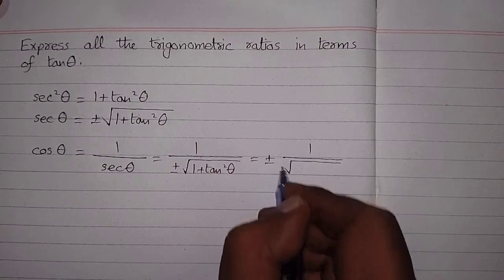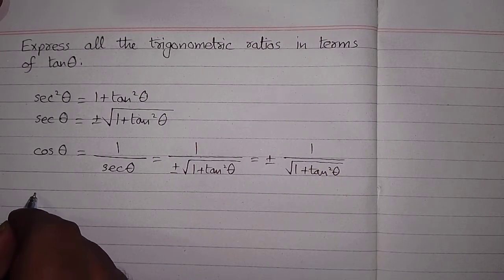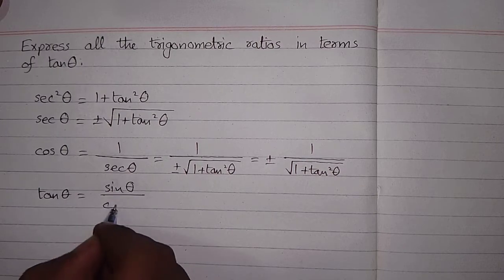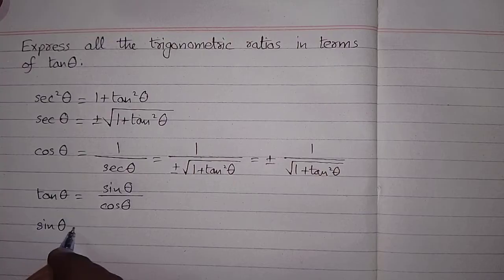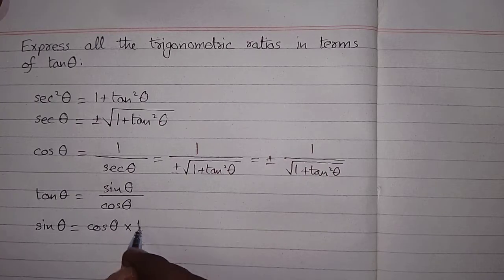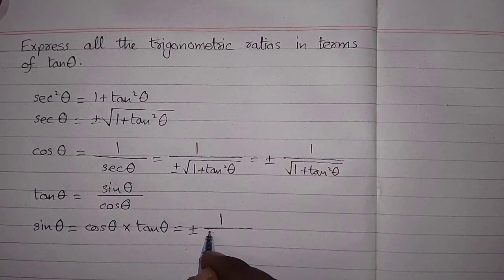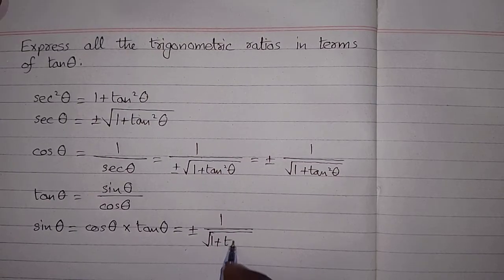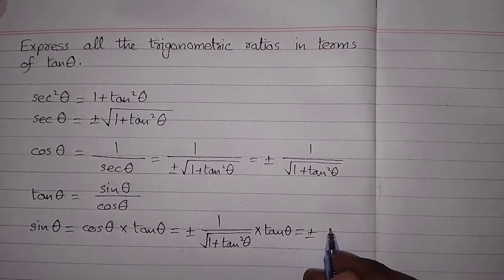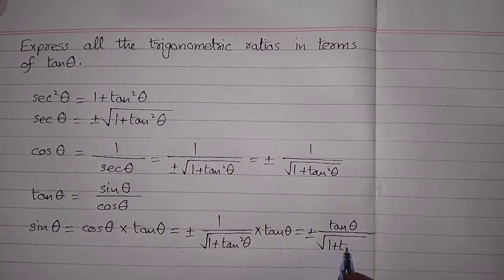Now we find the value of sine theta. We know that tan theta is equal to sine theta upon cos theta, so sine theta can be written as cos theta multiplied by tan theta. And cos theta is plus or minus 1 upon square root of 1 plus tan squared theta, multiplied by tan theta, which is equal to plus or minus tan theta upon square root of 1 plus tan squared theta.